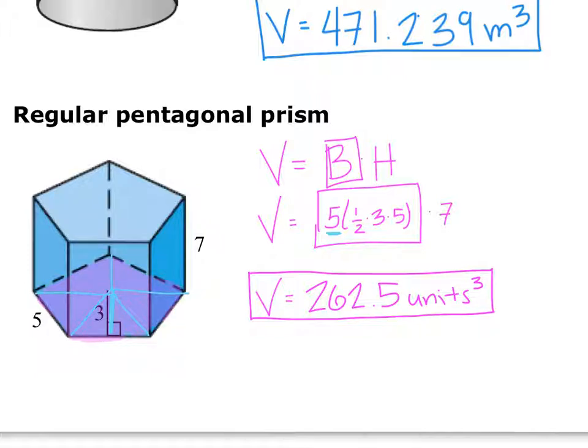3 is my height. And then I know my side length is 5, because of the 5 over on the other side. So, I know that it is going to be 1 half 3 times 5. And then your height is going to be 7. So, I punched all that in my calculator, and I got 262.5 units cubed.